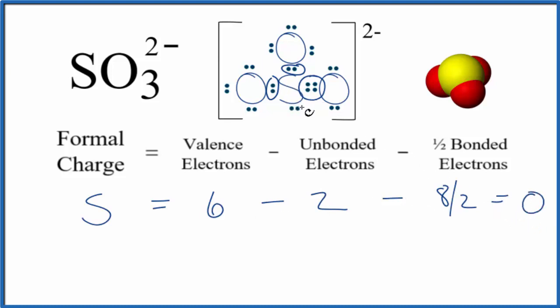So this sulfur in the center is going to have a formal charge of zero. And note, even though it has more than eight valence electrons, that's okay. Sulfur is an exception, it can have an expanded octet.